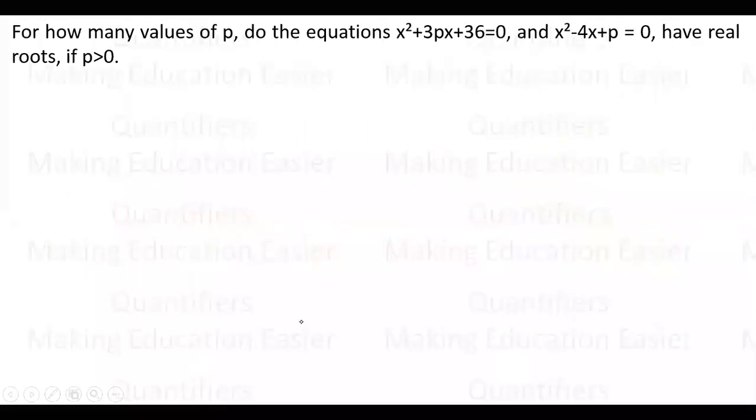Let's see the second question. For how many values of p do the equations x² + 3px + 36 = 0 and x² - 4x + p = 0 have real roots, if p > 0? So x² + 3px + 36 = 0 has real roots, so the discriminant D is greater than or equal to 0.